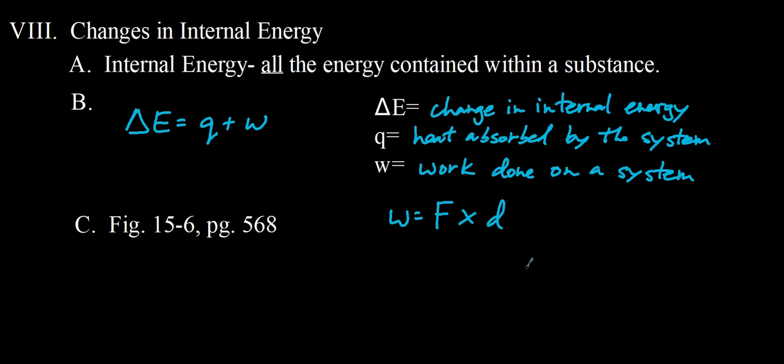Take a look on page 567. We see an example of a chemical process doing work — dry ice sublimes, forms a gas, and is able to raise a book, applying a force through a distance. Looking at the sign conventions: when Q is positive, heat is absorbed by the system from the surroundings — an endothermic process. When Q is negative, heat is released — exothermic. When W is positive, work is being done on the system by the surroundings. When W is negative, work is being done by the system on the surroundings.